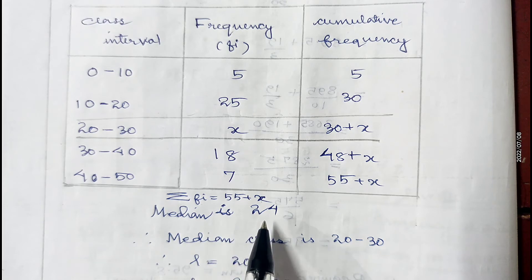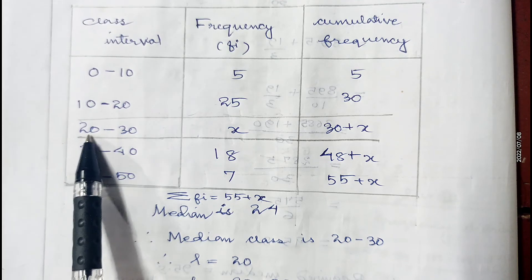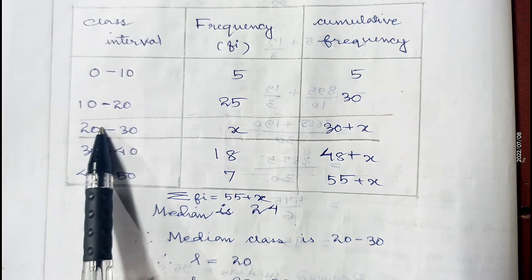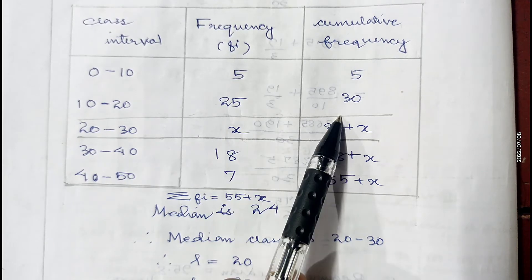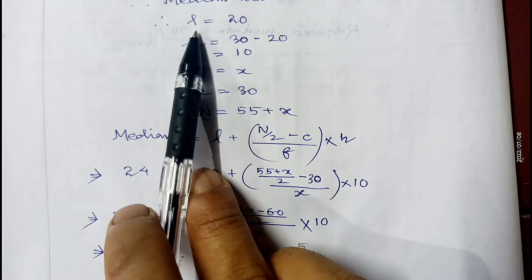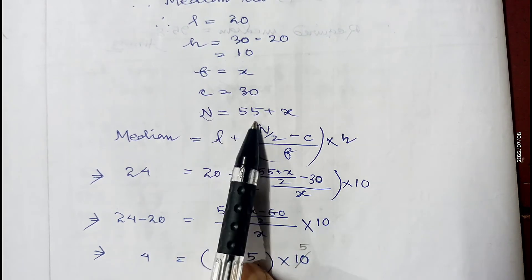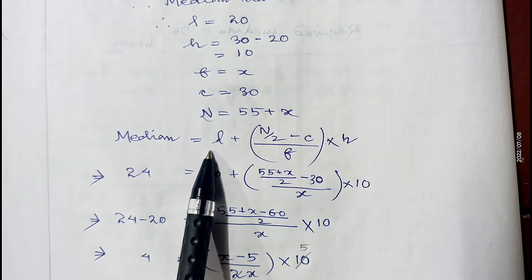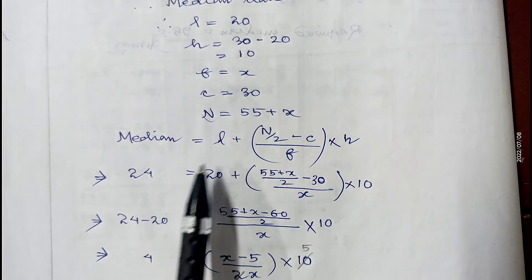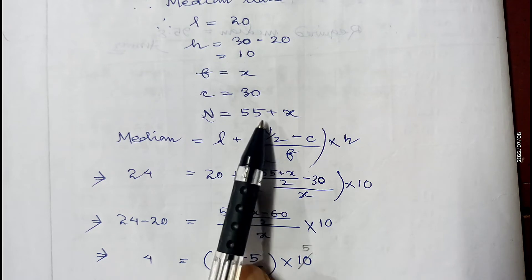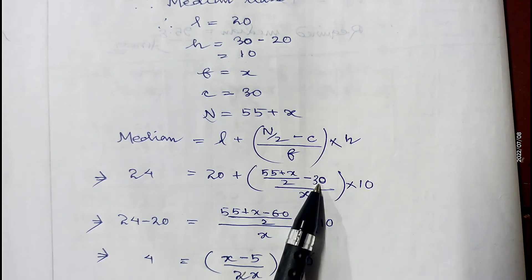Since the median is 24 and 24 lies between 20 and 30, the median class is 20 to 30. The lower limit l is 20, width h is 10, frequency of the median class f is x, cumulative frequency of the preceding class c is 30, and n is 55 + x. The median formula is: Median = l + [(n/2 − c) / f] × h.